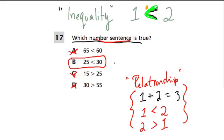So the only symbol that's set up right and is true — in math, when something is correct and always correct, you can call it true, like true or false. This is always true: 30 is always bigger than 25. So that's our answer: B.